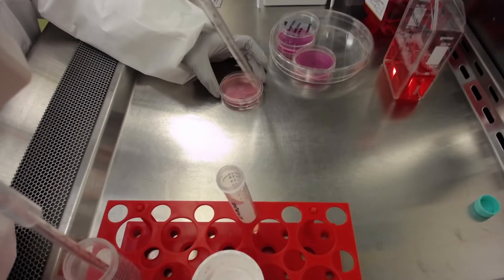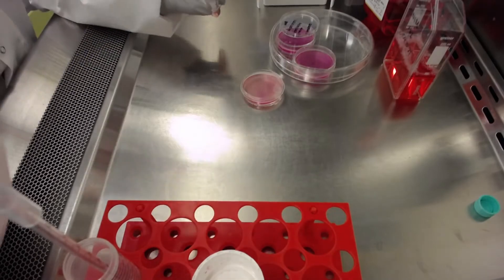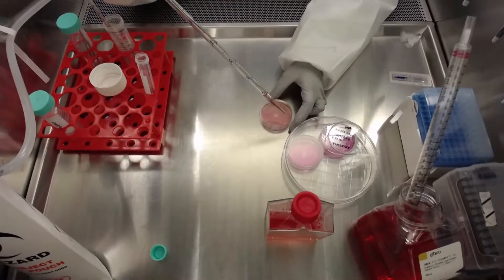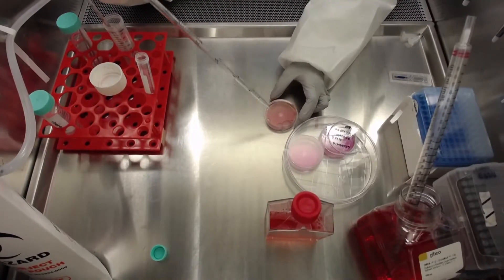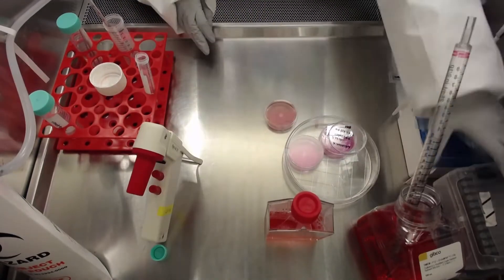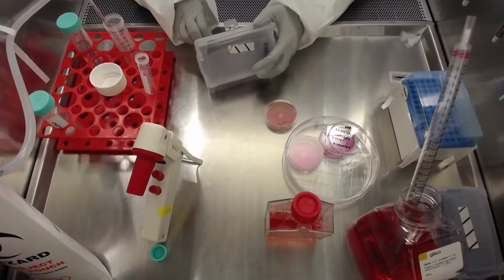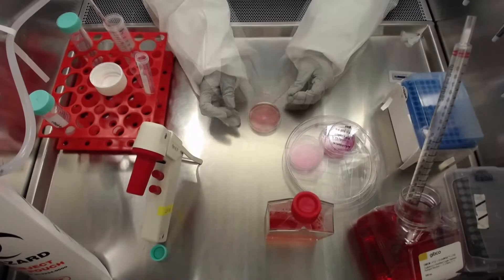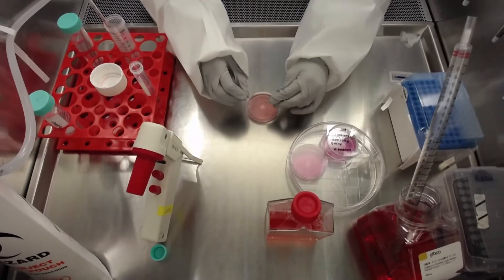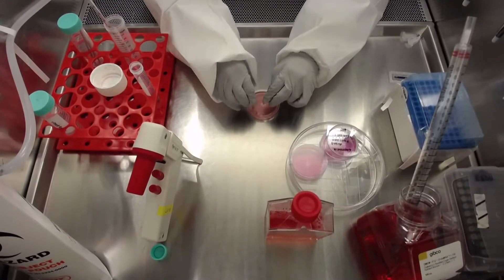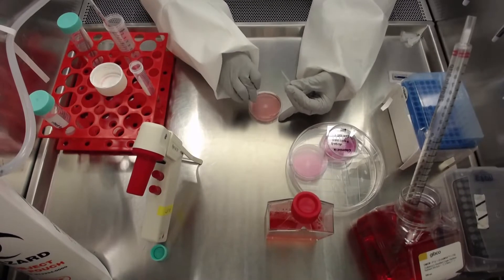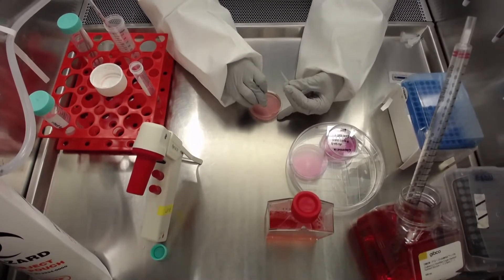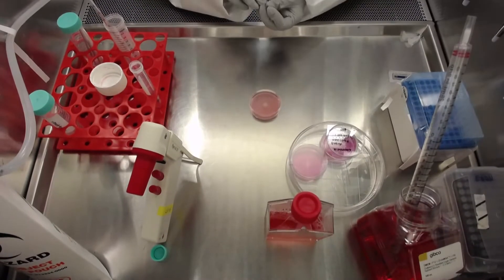After centrifugation, we add 6 milliliters of neuronal induction media with rock inhibitor to complete the volume. The extra media should be added slowly on the side of the dish to avoid disturbing the aggregates formed in the microwells. The media should fill the dish and properly cover the surface of the EB disc. Don't forget to remove the bubbles.